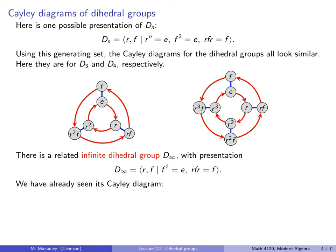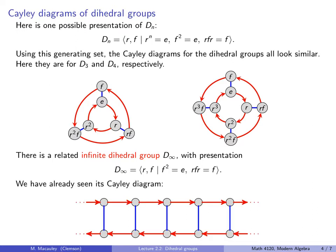There is a related infinite dihedral group, D_∞, with the following presentation. Notice it is exactly the same as the one above, except we get rid of the relation that the rotation eventually ends up back at the identity. We've seen this Cayley diagram — it's the same Cayley diagram as one, or actually several, of the seven infinite frieze groups. In other words, a couple of those frieze groups were isomorphic to the infinite dihedral group.